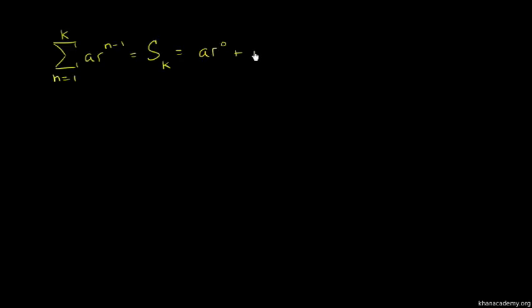That's a times r to the power 1, plus a times r squared, a times r cubed, up to a times r to the power k minus 1. That's the last term, a r to the power k minus 1.